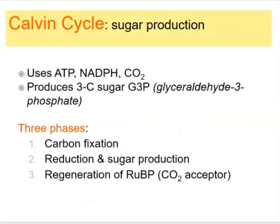Now we discuss the next phase of photosynthesis — the Calvin cycle, also called carbon reactions or dark reactions. This is essentially sugar production. We use ATP and NADPH generated in the light reactions and incorporate carbon dioxide from the air to produce a three-carbon sugar. That three-carbon sugar does not directly make glucose, since glucose has six carbons — you'd have to combine two of them. The Calvin cycle has three main phases: carbon fixation, reduction and sugar production, and regeneration of RuBP.